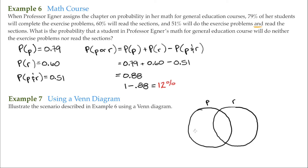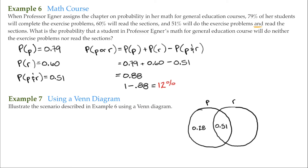Now I want to fill out this Venn diagram according to these probabilities. The first thing we should always do is fill in the overlap first — that's the simplest way. So I'll put in 51% for the overlap. Notice that 51% is also part of the 79%, so the remaining portion of circle P is 28%, since 28% plus 51% equals 79%. The same goes the other way — 51% is part of the 60%, so the remaining portion of circle R is 9%.